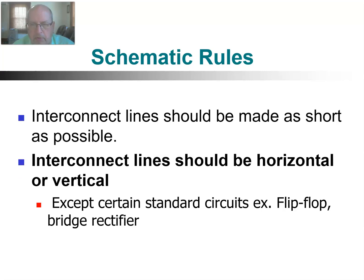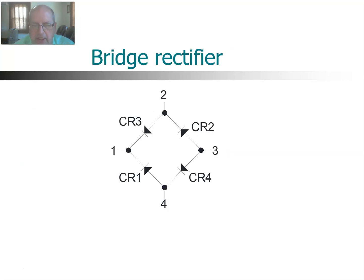You generally stick to keeping lines either horizontal or vertical. There are some exceptions, and that's basically specialized circuits — for example, a flip-flop or bridge rectifier, where it is acceptable to have your lines diagonal. Here is a diagram of a bridge rectifier. You can see you connect the diodes together using diagonal lines. So this is one of the exceptions. Generally, when you're connecting between your components, you want to keep your lines horizontal and vertical, with these couple of exceptions.